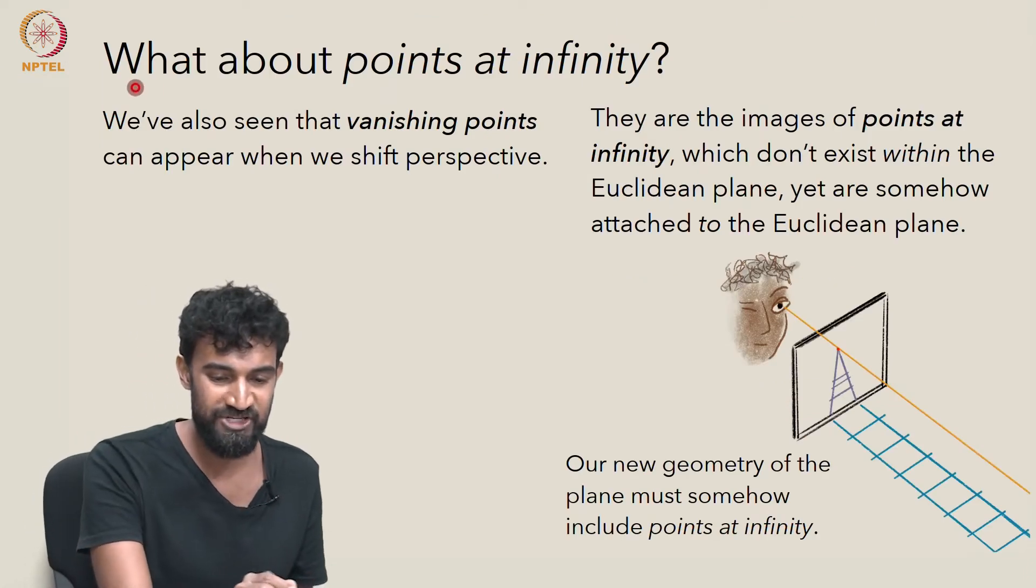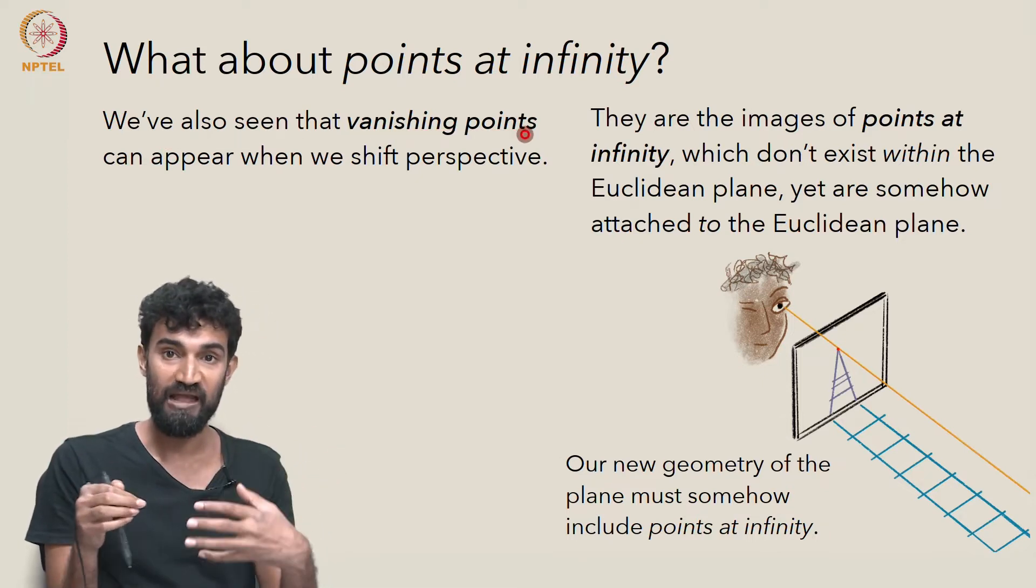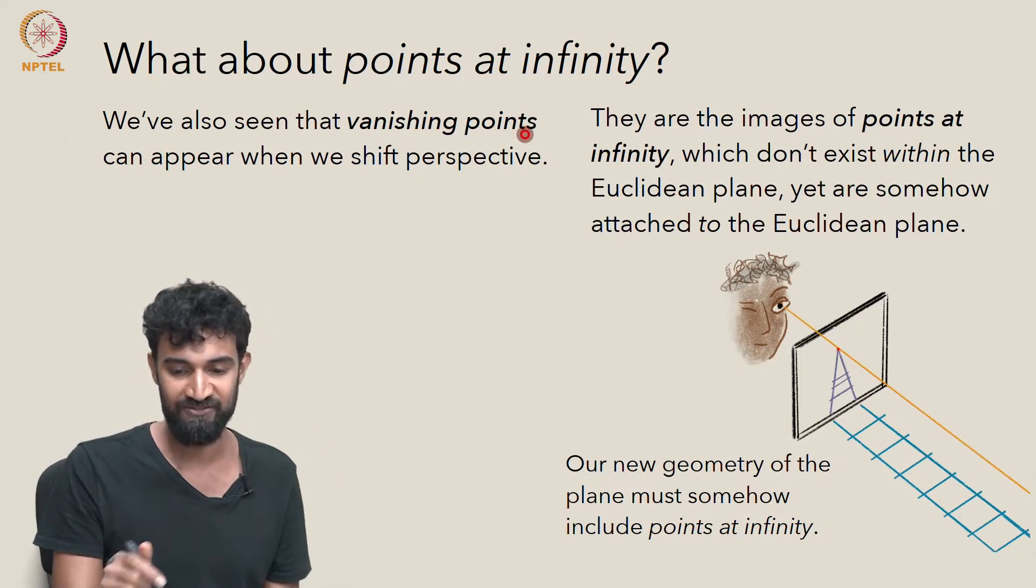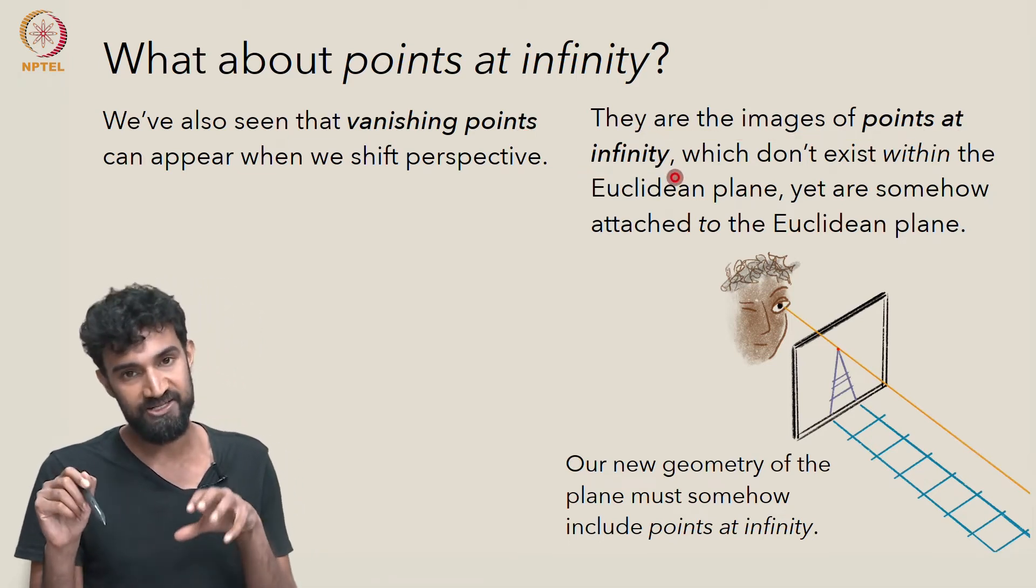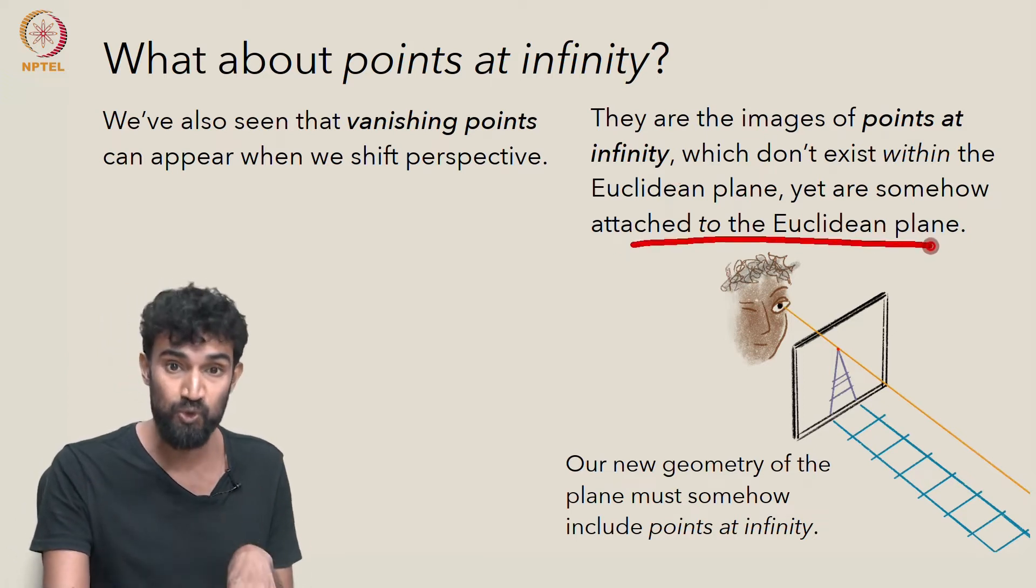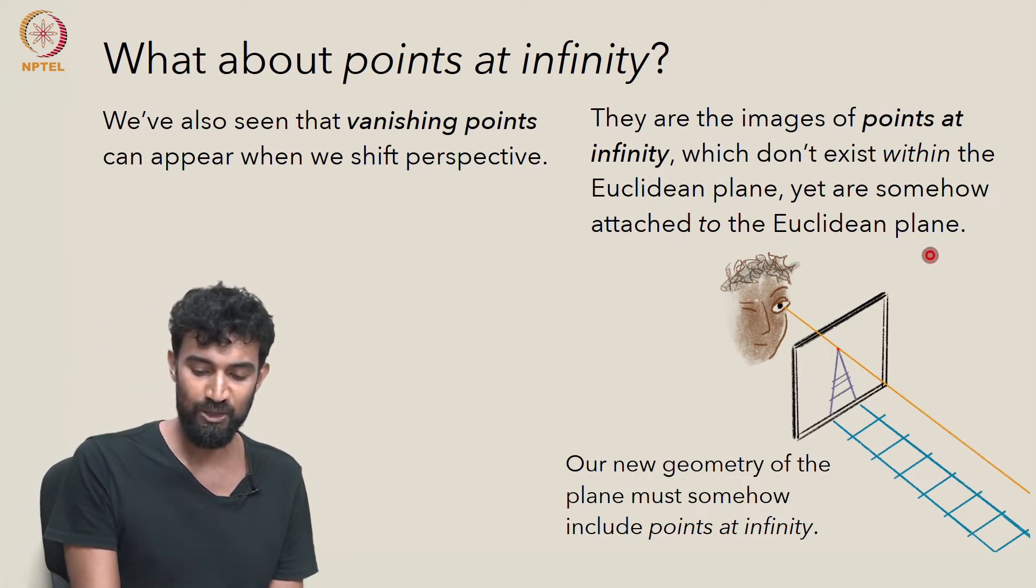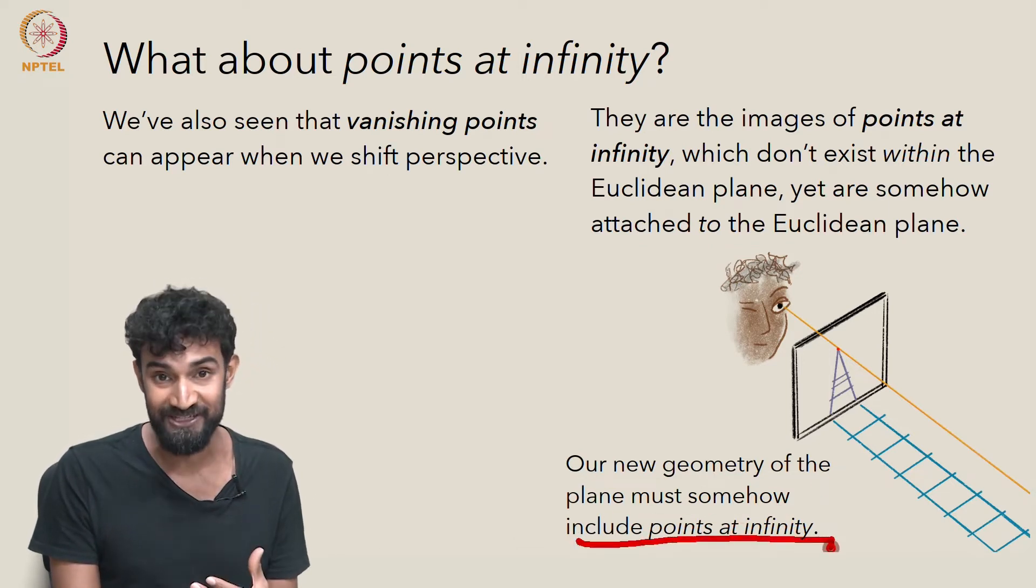But there's another important ingredient here, which is points at infinity. We've seen that vanishing points can appear out of nowhere almost when we shift perspective. That's because they're the images of points at infinity, which don't exist within the Euclidean plane, but are somehow attached to the Euclidean plane. So our new geometry of the plane must somehow include points at infinity.